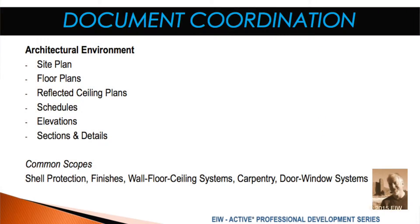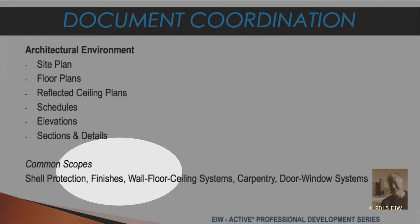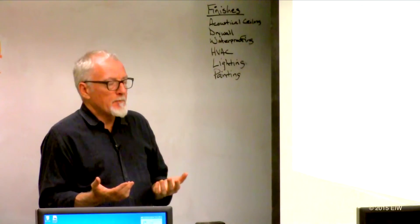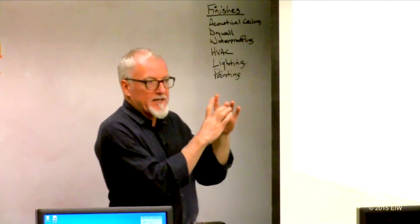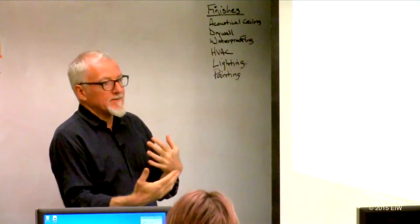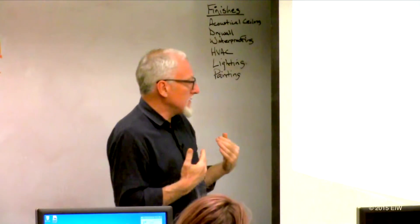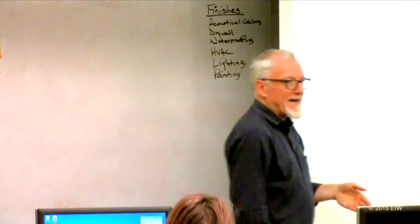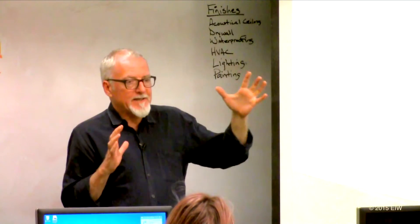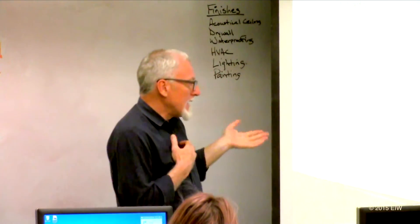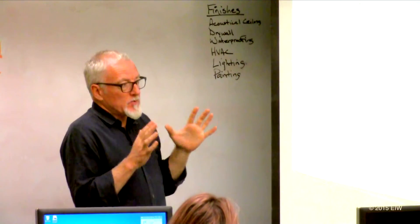A couple more examples — finishes is a big one. Let's say you're the drywall contractor. It's not that hard to figure out square footages and how many sheets, but your labor factor is going to be about how many light switches are on the wall, what edges you have to deal with, and what's behind that. The devil's in the details. You're going to need to know plumbing, mechanical, and electrical for all those finishes. It doesn't really matter what trade you're in — you really do need to know about the other trades well enough to know how they affect your work.